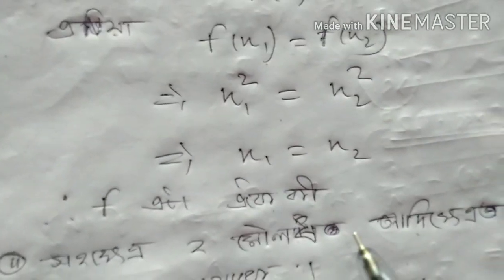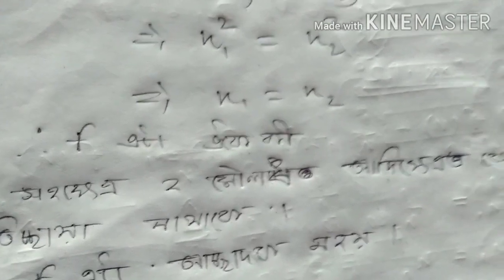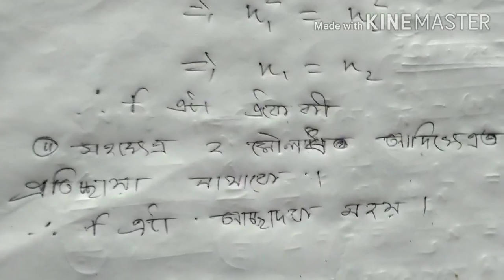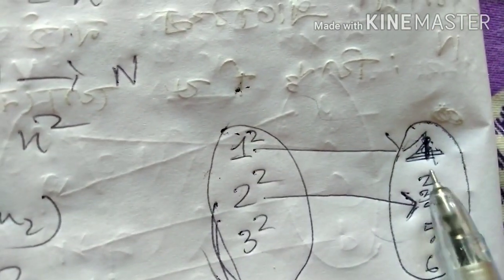This is the first question. f of x is 1 squared. So I am going to write 1 squared.